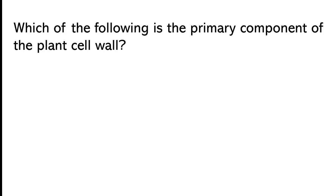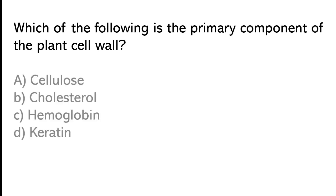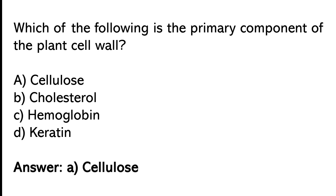Which of the following is the primary component of the plant seal wall? Cellulose, cholesterol, hemoglobin, or keratin. The correct answer is option A: Cellulose.